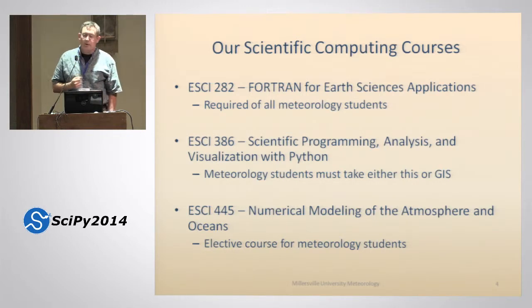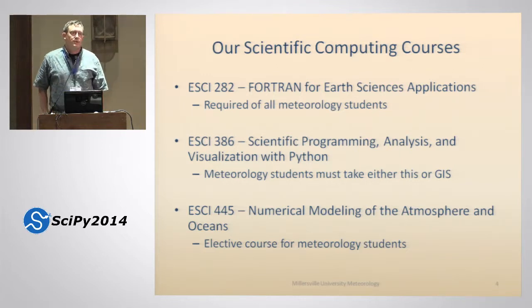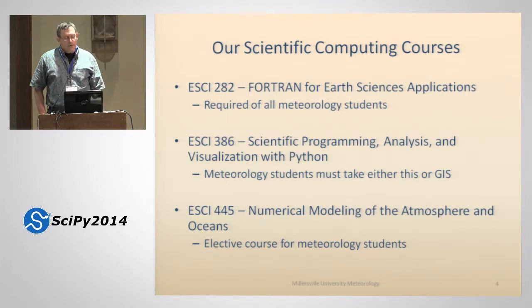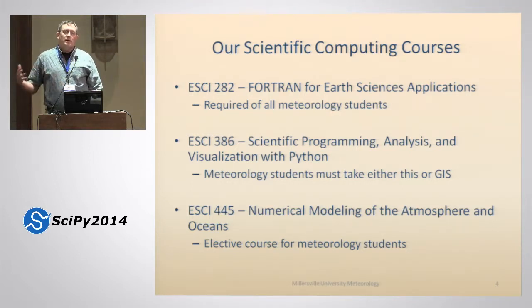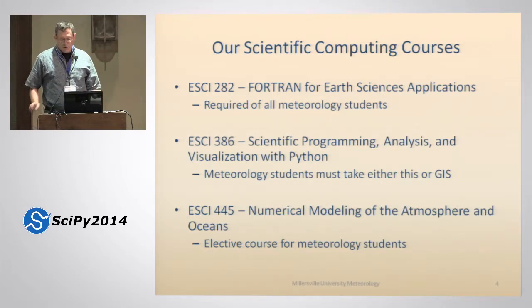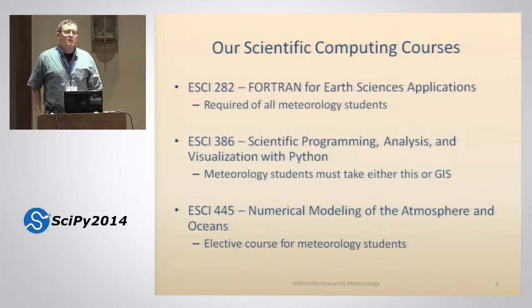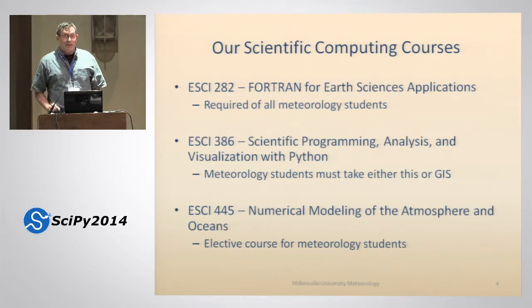The way we do that in our curriculum: we have a required Fortran course for all our students at the junior year. We also have a Python class as a follow-on that is optional. After the Fortran class, students need to take either the Python class or a GIS class, depending on whether they want to go into the numerical side or into broadcasting or work for AccuWeather. A significant number of students actually take both, even though they're only required to take one.